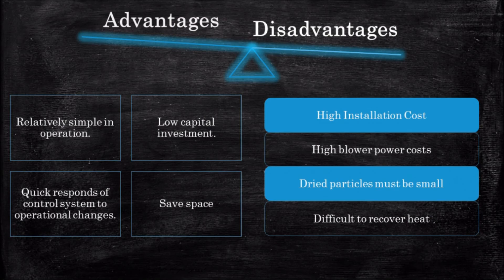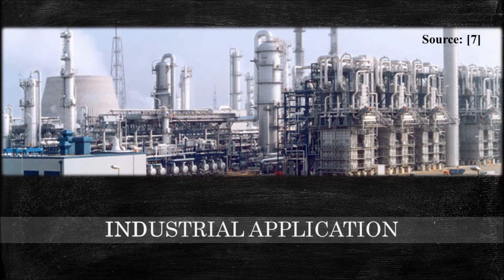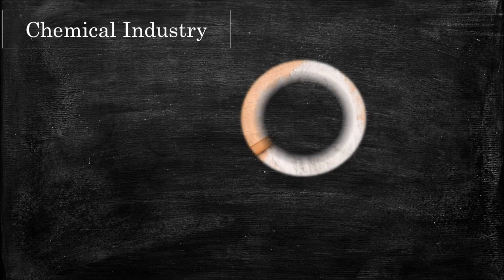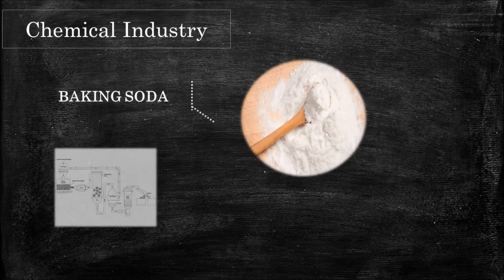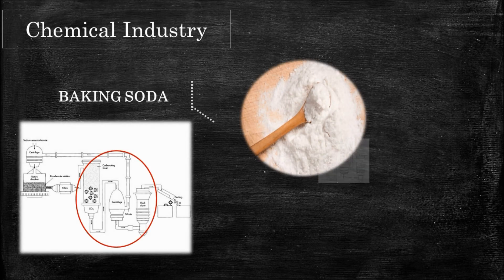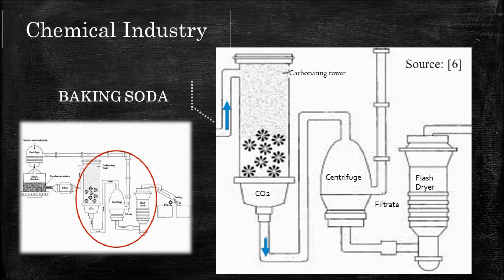Flash dryers have been used to dry products in food, chemical, and mineral industries. One application is in the chemical industry which produces sodium bicarbonate. The crystals from the carbonating tower are washed in a bicarbonate solution, forming a wet cake-like substance. The washed filter cake is then dried on a vertical flash dryer. The products are sorted by particle size and packaged appropriately.